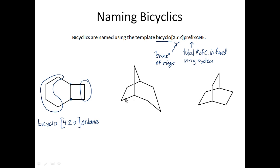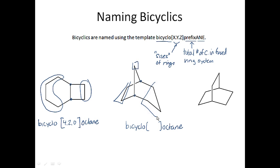If you look at this next molecule, it has eight carbons total, so it's also going to be a bicyclo octane. If these are my two fused carbons, I've got one carbon here, two carbons here, and three carbons there. So this would be bicyclo[3.2.1]octane.